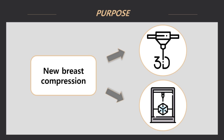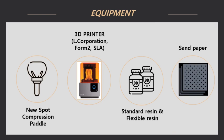The following three designs have diversified shapes and thicknesses to take into account both human suitability and filming efficiency. The equipment used in the experiment was the new spot compression pedal, L-corporation's 3D printer, standard resin, flexible resin, and sandpaper.